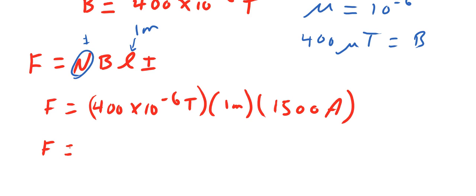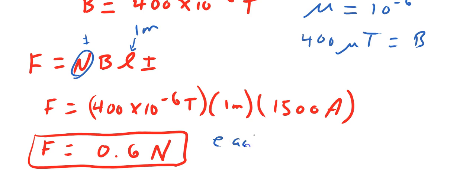And if we do the math on that we should come up with 0.6, and now the unit of mechanical force is newtons. Remember that we are assuming that each conductor exerts a force of 0.6 newtons on the other.